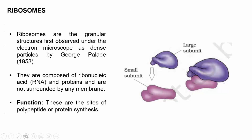The next organelle is ribosome. Ribosomes are non-membrane-bound granular structures first observed under the electron microscope as dense particles by George Palade in 1953. Ribosomes are composed of ribonucleic acid and proteins and are not bound by any membrane. Each ribosome consists of two subunits: a larger subunit and a smaller subunit.